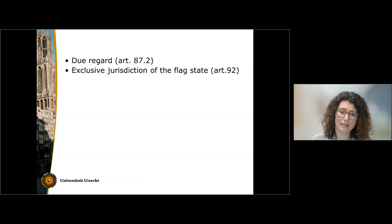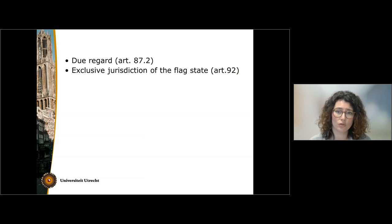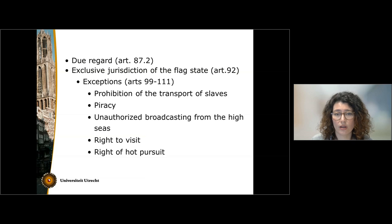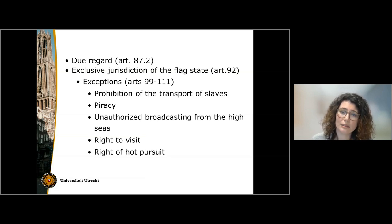On the high seas, the flag state has exclusive jurisdiction on its vessels. As the high seas cannot be submitted to the sovereignty of any state, jurisdiction is applied on the basis of the nationality link between the vessel and the state of registration — the flag state. There are, however, some exceptions to the exclusivity of the jurisdiction of the flag state, regulated in Articles 99 to 111, which mainly concern the possibility of exercising some enforcement powers in relation to illicit activities on the high seas.